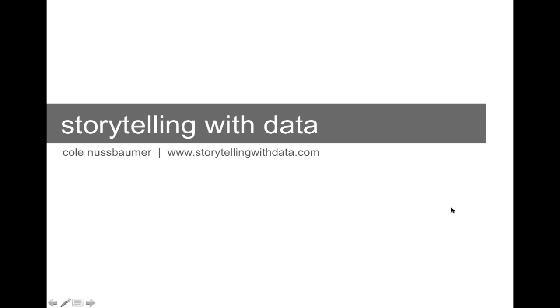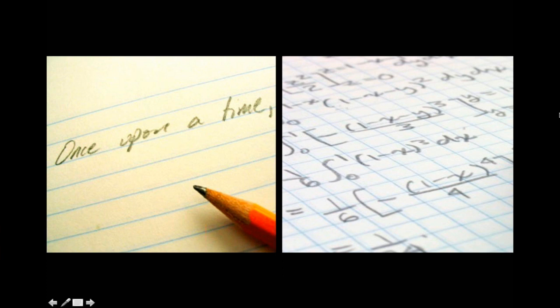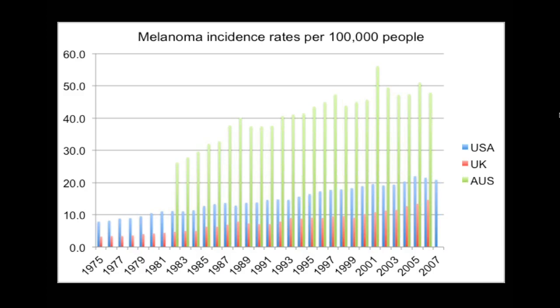In school we spend a lot of time learning about language — how to read, how to write, how to tell stories — and a lot of time on math, how to make sense of numbers. But it's rare that we learn how to combine these two things. It's rare that anybody actually teaches us how to tell stories with data, and yet that's becoming something very important in business and in the philanthropic world today.